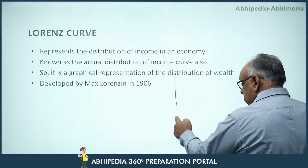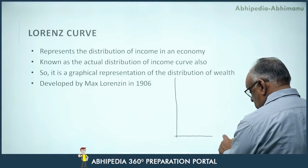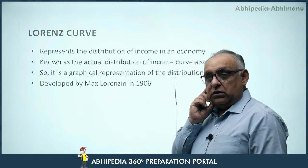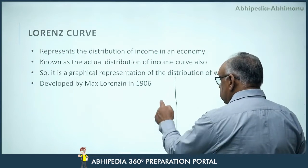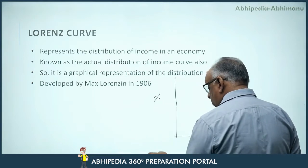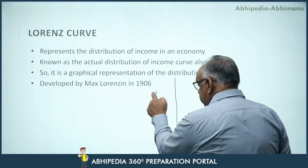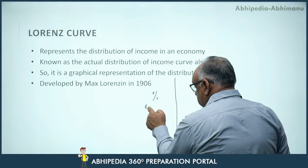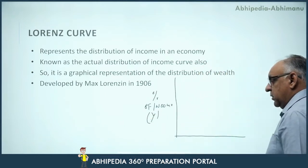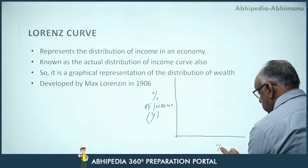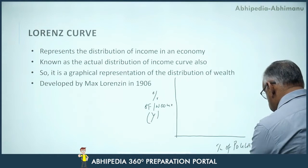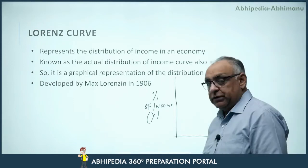Let us draw the curve graphically to understand it. This is the x-axis and this is the y-axis. Here on the y-axis is given the percentage of income — let me call it Y. And here on the x-axis is given the percentage of population — let me call it P.